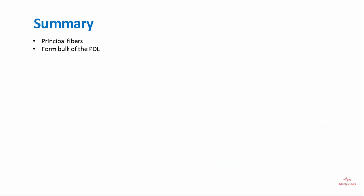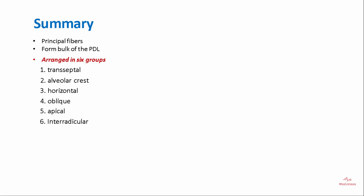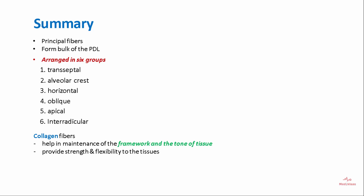To summarize, the fibers of the periodontal ligament are called principal fibers. They form the bulk of the periodontal ligament and are arranged in six groups: transseptal, alveolar crest, horizontal, oblique, apical, and interradicular. Collagen fibers help in maintenance of the framework and tone of the tissue and provide strength and flexibility to the tissues.